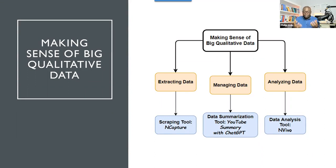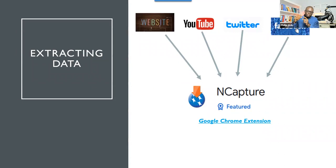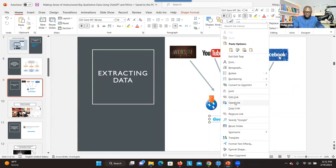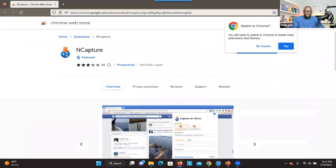So these are the software and applications you could use to help make sense of your data. Let's start with NCapture. When you go to Google and type NCapture, it will give you access to the software where you can download it and put it as an extension on Google Chrome. What I want you to know is that when you get access to this software, you'll be able to go to any website and download any information you want to help address your research question. NCapture is a way of downloading information from online, but that information can only be used when you have NVivo software — they are compatible.